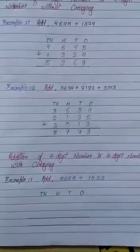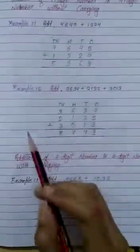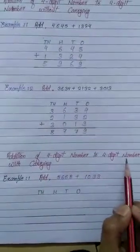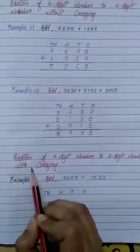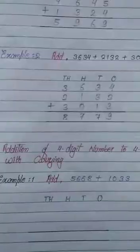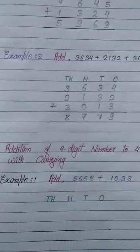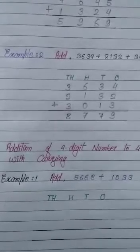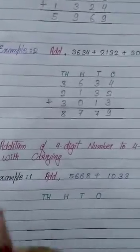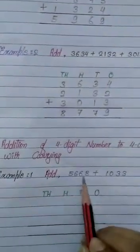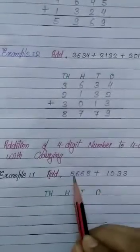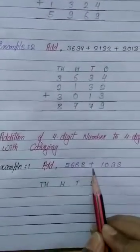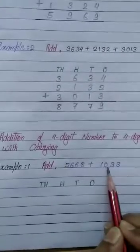Now we will learn addition of 4-digit numbers with carrying. Let's see some examples. Example 1: In this example, we have to add 5,668 plus 1,033.